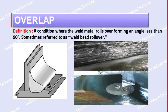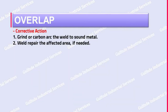Definition of overlap: it is a condition where the weld metal rolls over, forming an angle less than 90 degrees, sometimes referred to as weld bead rollover. What is the corrective action for overlap? One: grind or carbon arc the weld to sound metal to weld repair the affected area if needed.